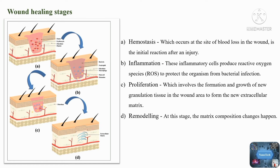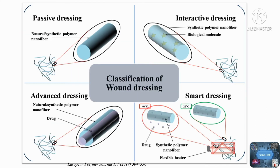Wound self-healing is slow and susceptible to infection; therefore, appropriate wound dressing is required to promote and guide the healing process. Classification of wound dressing: on the basis of the affinity of dressing towards the wound, wound dressings are divided into four categories — passive dressing, interactive dressing, advanced dressing, and smart dressing.